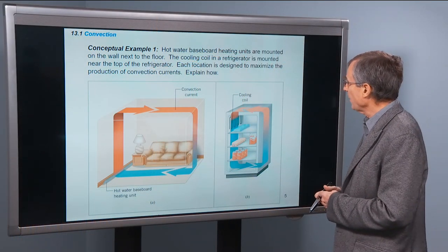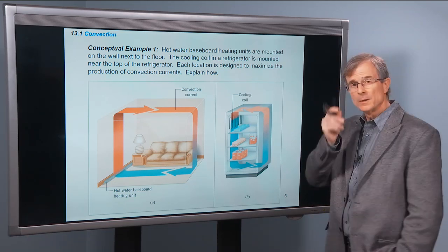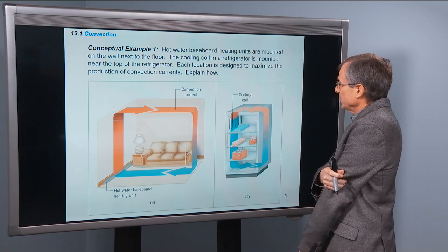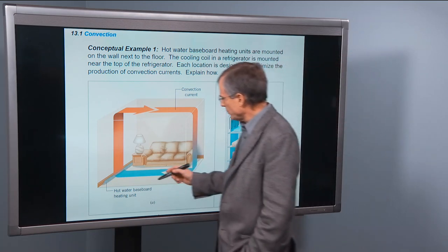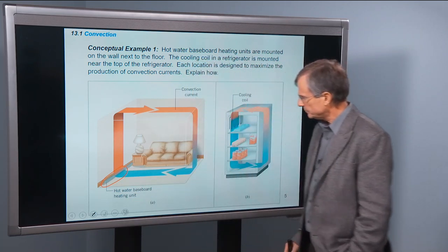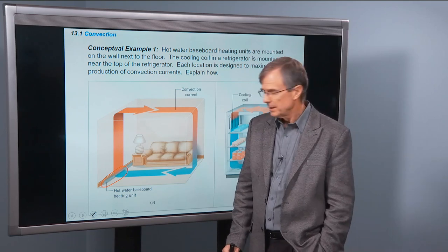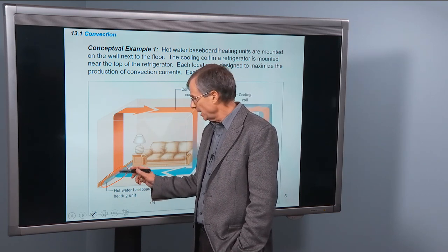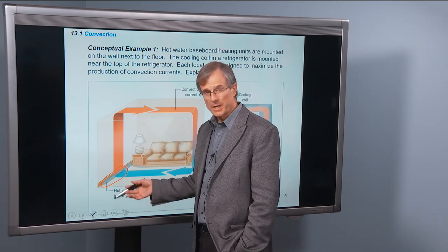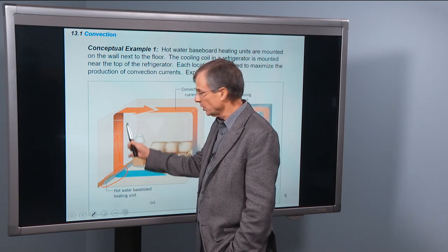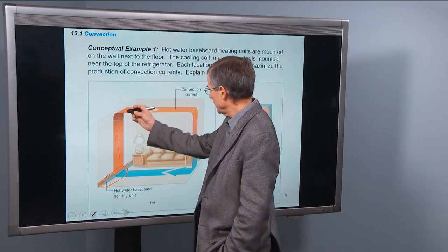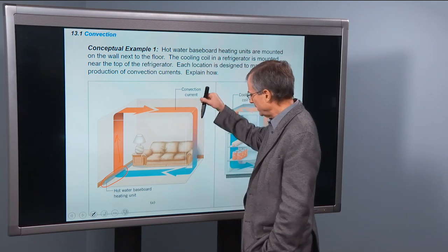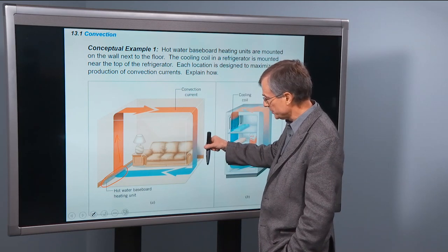A conceptual example. Hot water baseboard heating units are mounted on the wall next to the floor. Why? We can understand it now in terms of this convection that we've been able to understand. Here's the baseboard unit. It's mounted along the wall near the floor. What's its function in life? It's a heating unit. So it's going to heat the air in this vicinity. Well what's that air going to do? Hot air expands and rises. So we'll get a nice motion along the wall of that hot, heated air. It goes along the ceiling. As it is moving through the room and mixing with other parts, it's cooling down. And then comes down around the other side. You can't go up unless you come down.